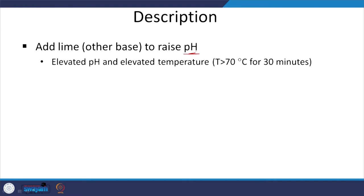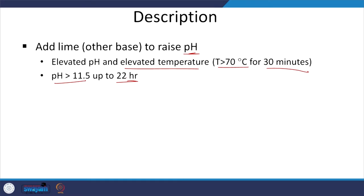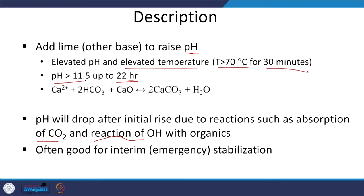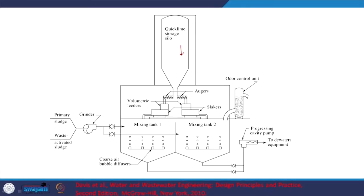Another kind of stabilization is lime or alkaline stabilization. We add lime to increase the pH and increase the temperature to a pretty high value for around 30 minutes. If the pH is 11.5, this is maintained for up to 22 hours. The pH will drop after the initial rise due to reactions such as absorption of carbon dioxide and reaction of OH⁻ with organics. This is good for emergency stabilization — for example, if your anaerobic or aerobic digester has failed or requires maintenance and you need to prevent pathogens or vector issues.